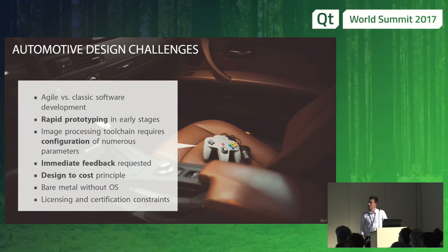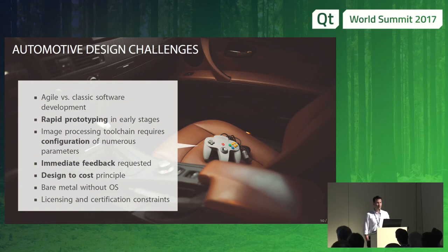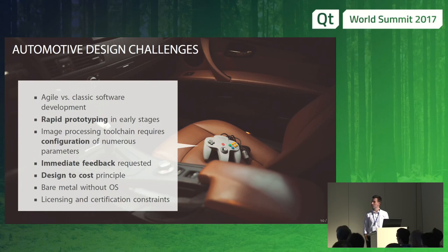When we started with this, we had to decide upon a lot of different things. In automotive we're in a classic development world. Of course, we always like to develop agile software, but when it comes to testing, verification, and validation, we often get stuck in the classic software development process that takes years until you get a final automotive-qualified result. So we had to struggle with rapid prototyping in early stages versus the classic software validation processes as we know them from the automotive validation world.